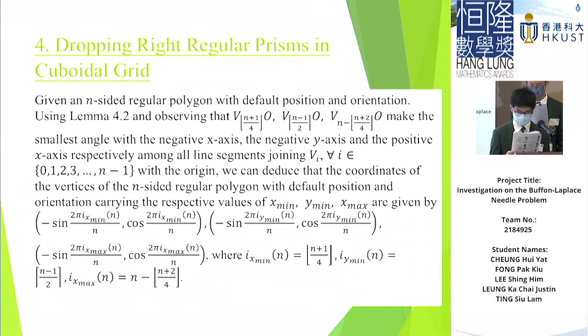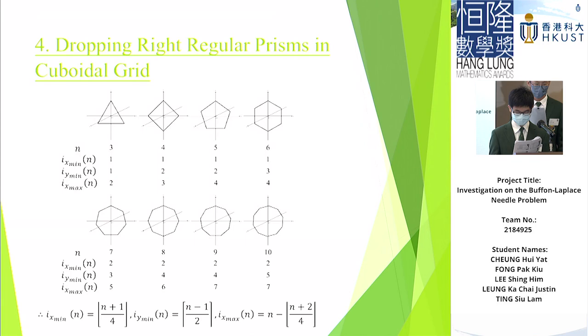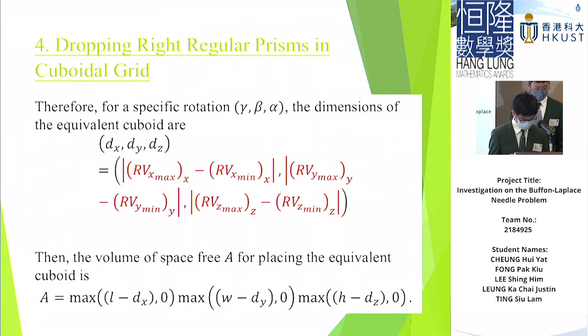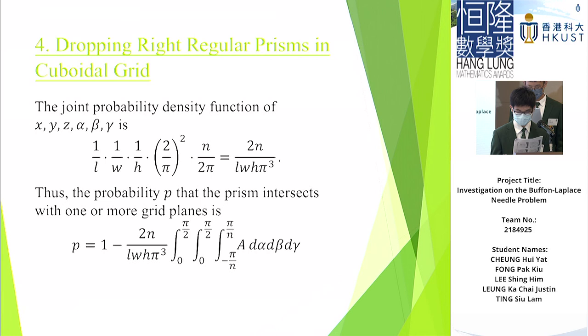And as time is running short, I don't think we have enough time to explain all of this. So let's jump to the conclusion. So, we use a similar method to obtain the final result. And the probability that the prism intersects with one or more grid planes is given below, which is 1 minus a triple integral. Thank you very much.